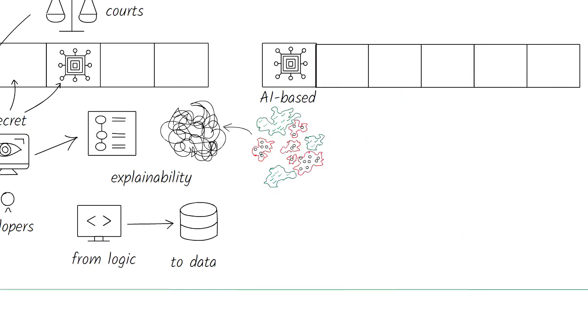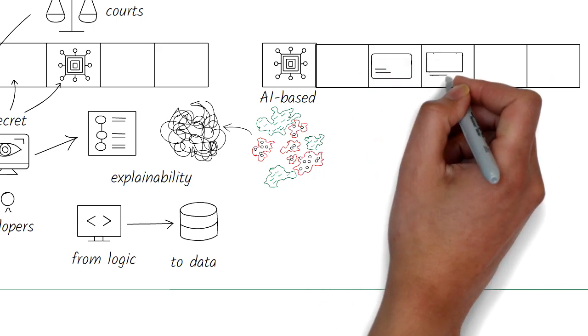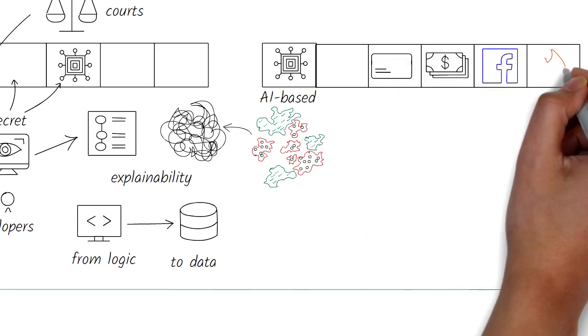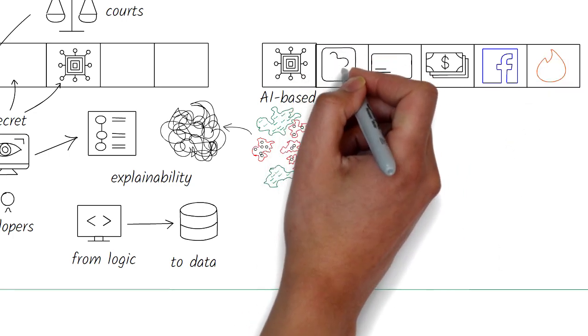Algorithms make a wide range of decisions for each of us. Some examples are how much interest you pay on credit card debts, how much your health insurance premium will be,